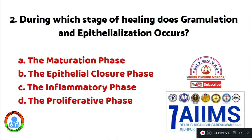Question 2: During which stage of healing does granulation and epithelialization occur? Option A: the maturation phase. Option B: the epithelial closure phase. Option C: the inflammatory phase. Option D: the proliferative phase. Granulation and epithelialization occur during Option D, the proliferative phase.